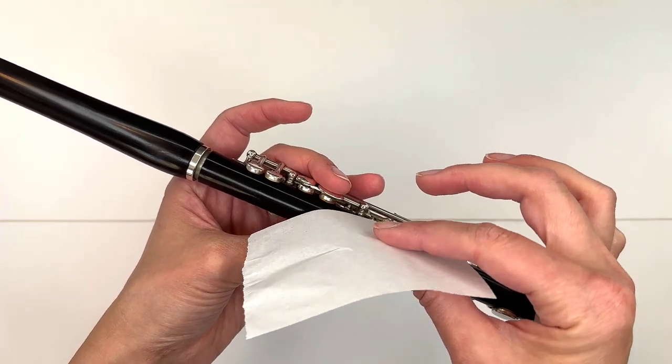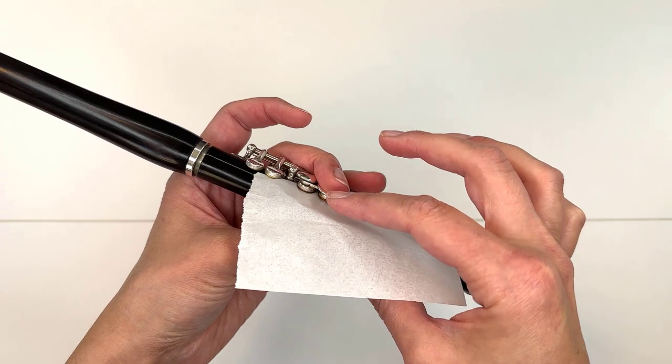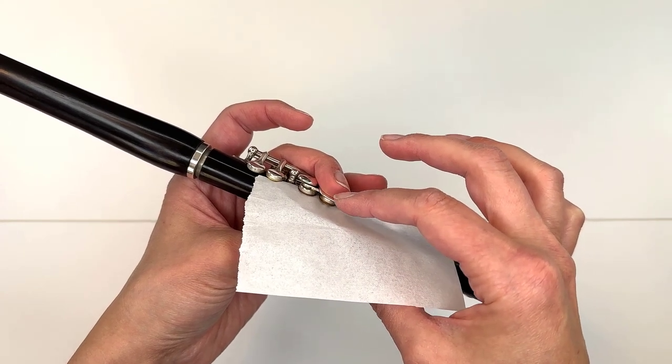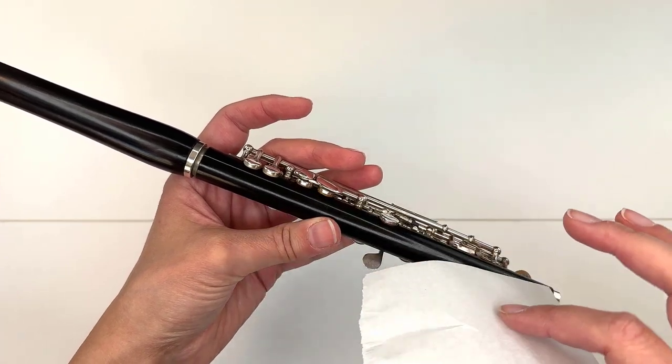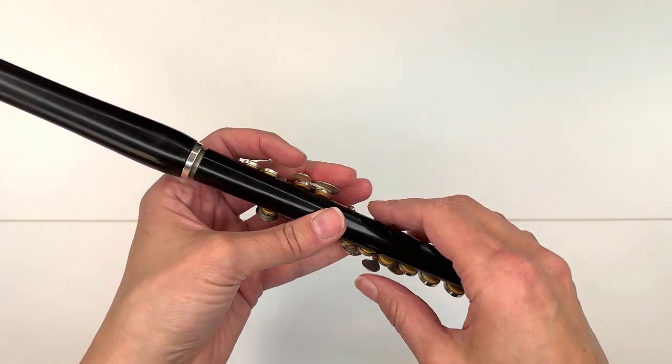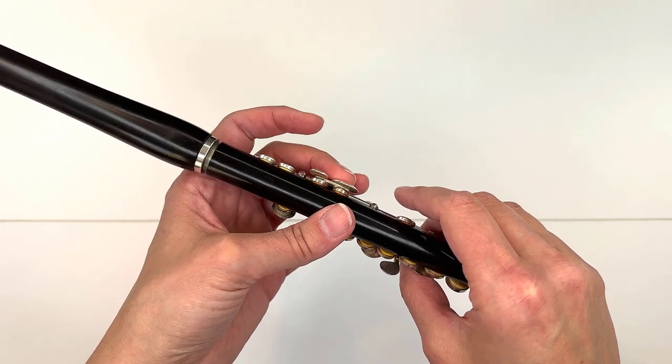Then I'm going to reposition it to another spot and press again. The idea is that any moisture that was sitting on the pad will then absorb into the tissue, and then I'll release and gently remove it. Typically that is going to take care of any sticky or popping keys.